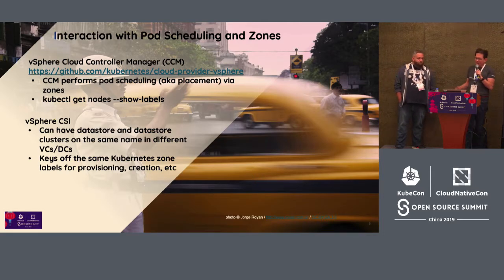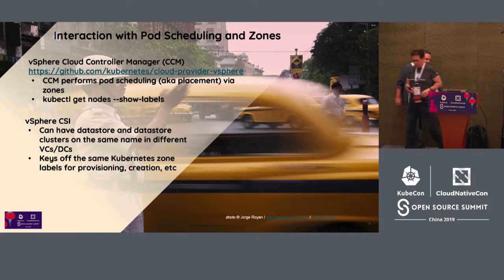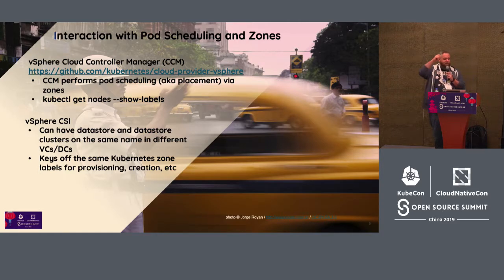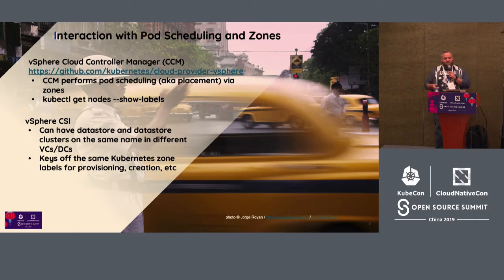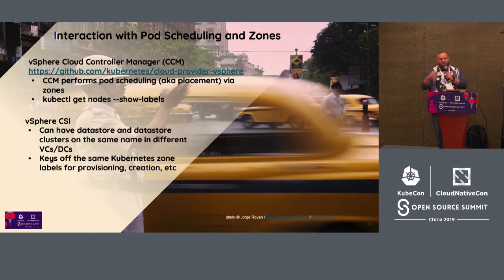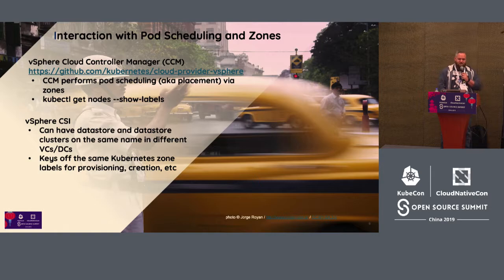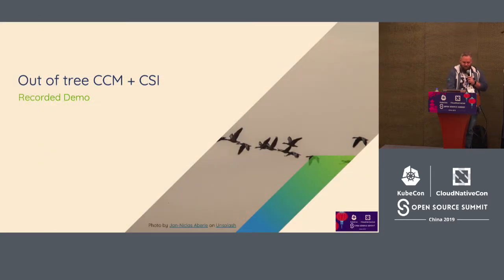So this interaction with pod scheduling and zones — I'm going to hand it off to my colleague. As Steve mentioned, the out-of-tree Cloud Provider and CSI are getting new features. One of these is the ability to schedule pods that have storage assigned to a specific zone. We can define zones arbitrarily in vSphere using tags — specifying a data center and the zone where it lives. Using those tags, we can schedule pods with storage that lives in that specific region or zone. I had to record a demo because I wasn't sure if we'd be able to connect to our system live.